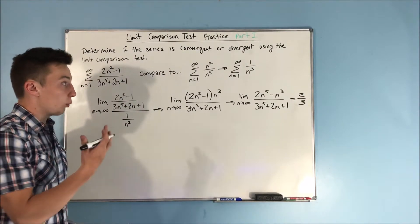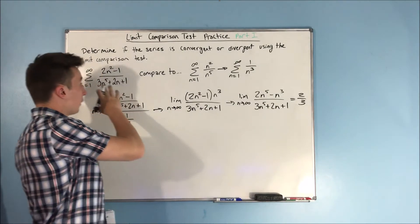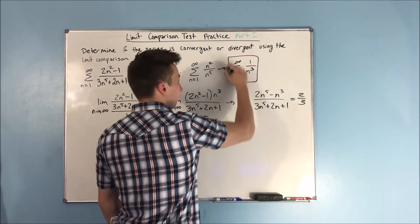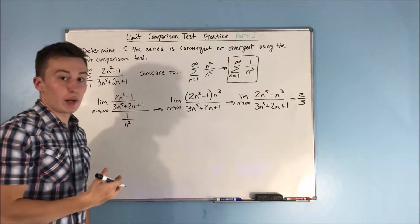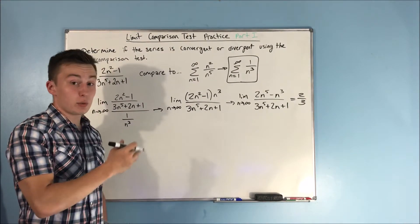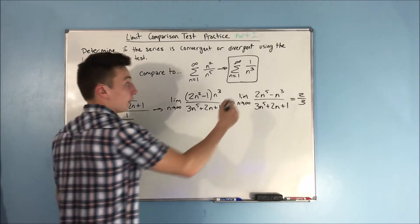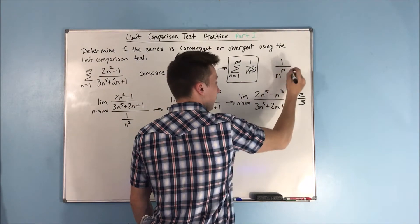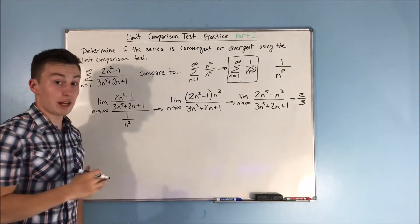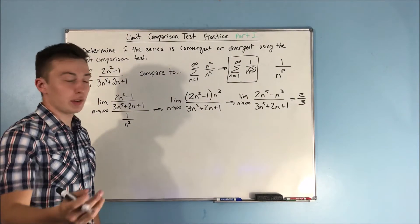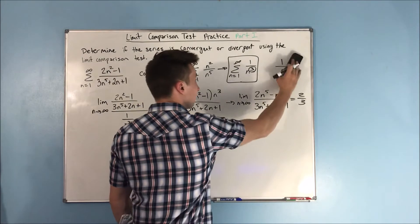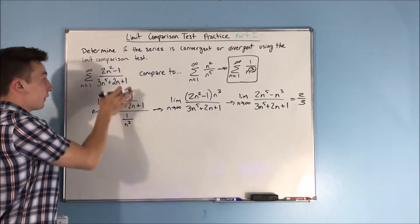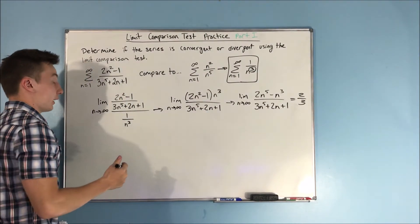That means that either both these series are going to converge or both are going to diverge. We know that one over n cubed is convergent — it's a p series and p is greater than one. Our p is that exponent; it's from the form one over n to the p, that's why we call it a p series. If that's something confusing, definitely go check that video out. But we know that this series converges, so this series is convergent by the limit comparison test.